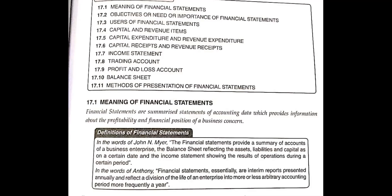In the entire accounting period, we prepare a statement in which we tell what happened in our business. We prepare the final balance sheet. The financial statement means that we make profit and loss accounts and prepare the balance sheet for the whole year.